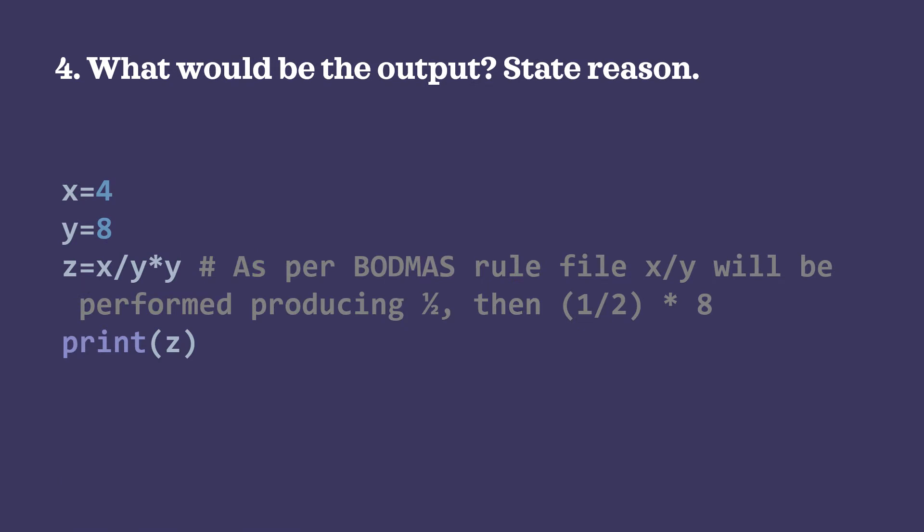Question 4: what could be the output? x = 4, y = 8, z = x/y * y. As per BODMAS rules, division is performed first: x/y = 4/8 = 0.5. Then multiplication: 0.5 * 8 = 4. So the output is 4.